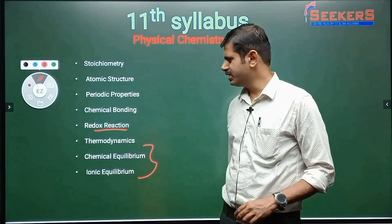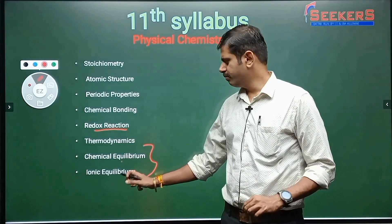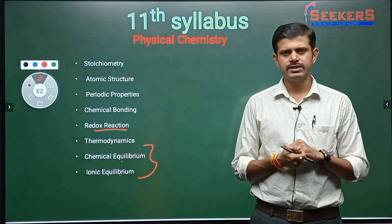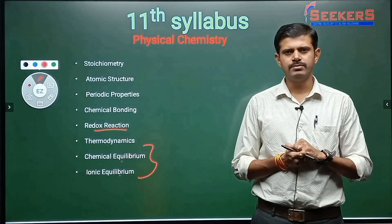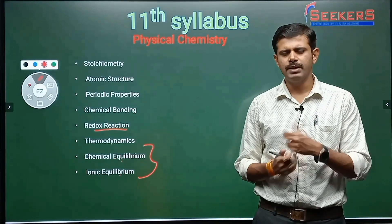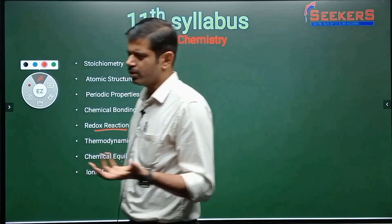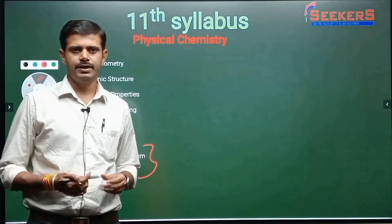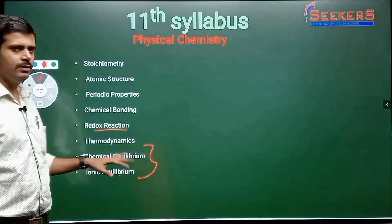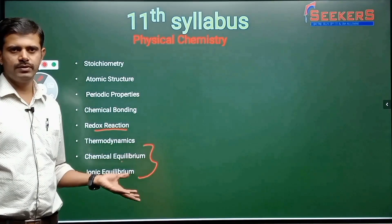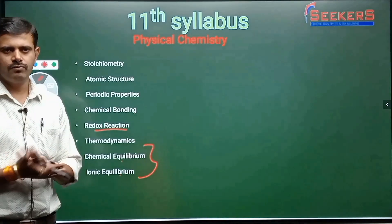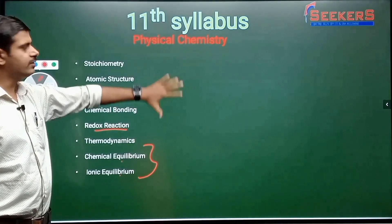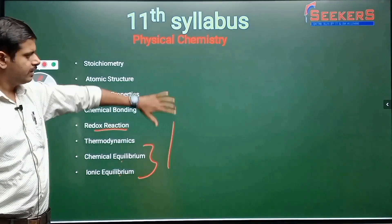Chemical equilibrium and ionic equilibrium actually come in the same chapter, but because it is very big, we can divide it into two parts. Chemical equilibrium covers simple physical or chemical reactions, while ionic equilibrium covers equilibrium between ions. This completes 11th physical chemistry.